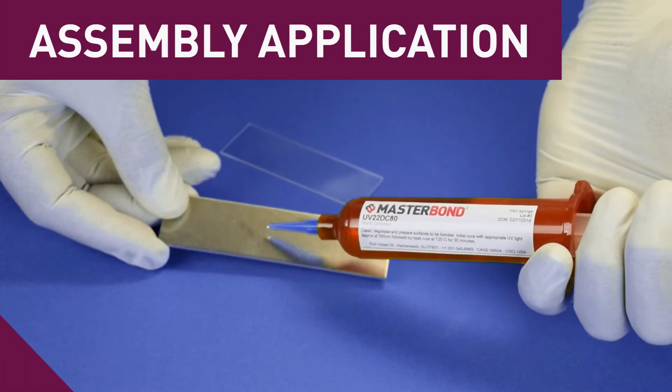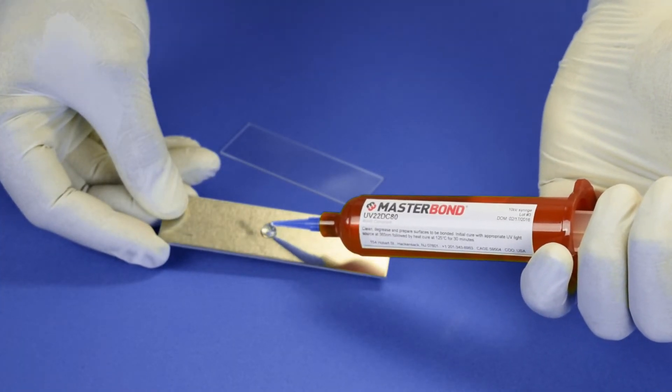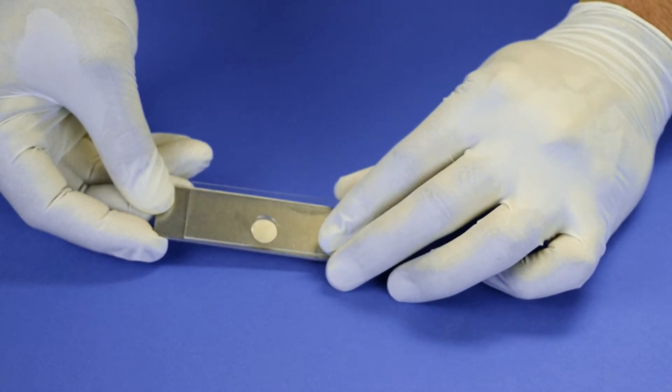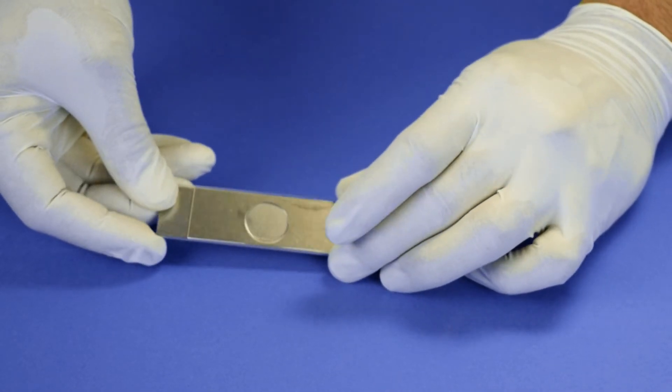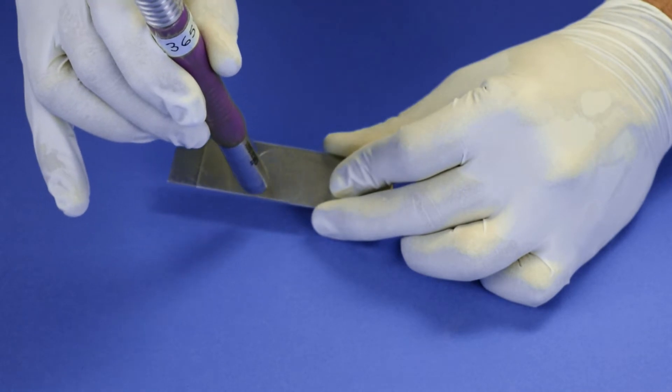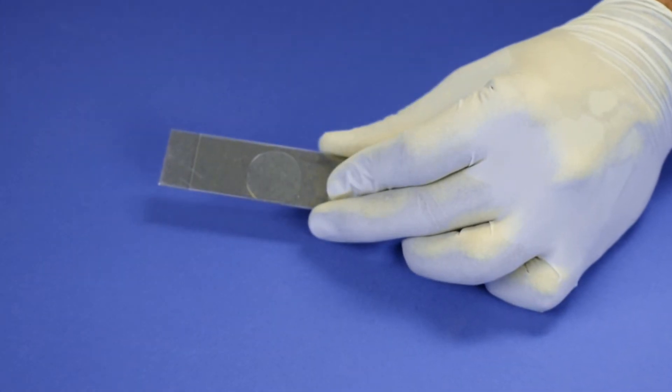While an industrial assembly application may have more intricate components, here we see the adhesive joining aluminum and glass pieces. First, the UV portion of the cure fixtures these parts.